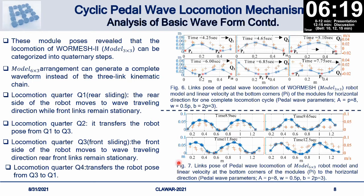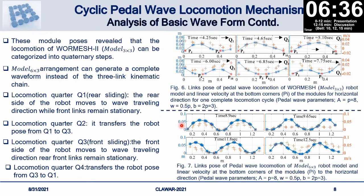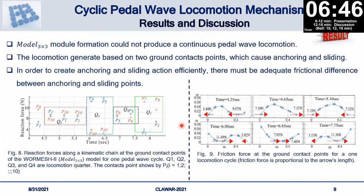For the many-link model, it is a continuous waveform, and we can also see the velocity along one connection follows a sinusoidal function. Based on this locomotion, when we come to the three-by-three model, it will make some difficulty. Friction is the most crucial physical parameter of the robot.